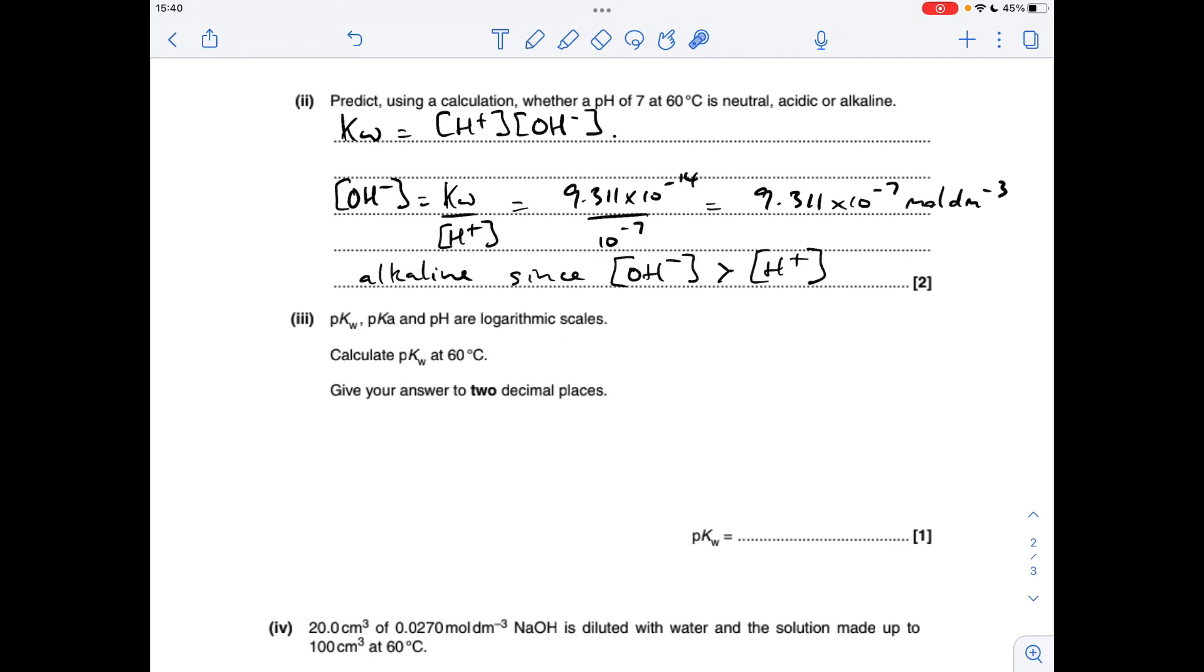Next part. So we already know that pKa is minus log of Ka. We already know that pH is minus log of H plus concentration. So pKw is going to be minus log of Kw. So to two decimal places, it's 13.03.